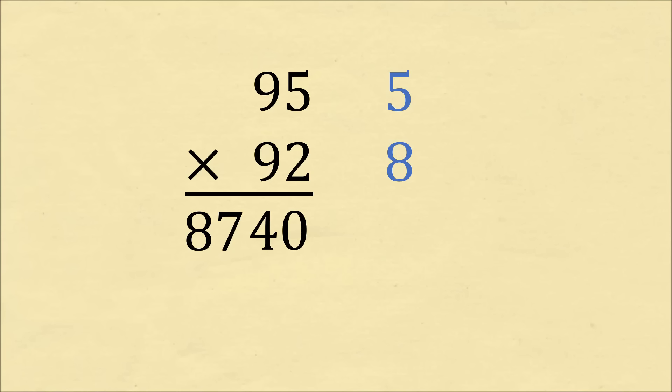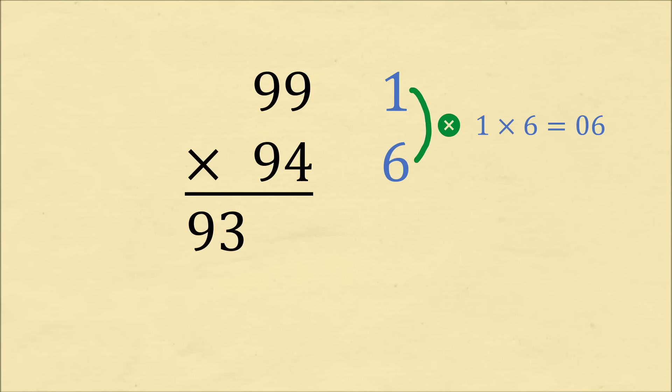This method always works for multiplying two numbers that are in the 90s. But there are a few special cases that require extra consideration. Let's do one example. Let's do 99 times 94. First, we need 99 plus 1 is equal to 100, and 94 plus 6 is equal to 100. Let's cross-subtract. 99 minus 6 is equal to 93. Now we need 1 times 6. So 1 times 6 is equal to 6. But in this mental math trick, we need to make sure the product fills two digits. So 1 times 6 should be written as 06. We append these two digits, and we have that 99 times 94 is equal to 9306.